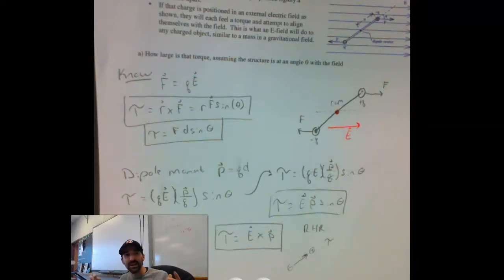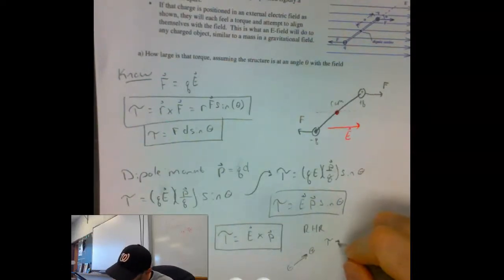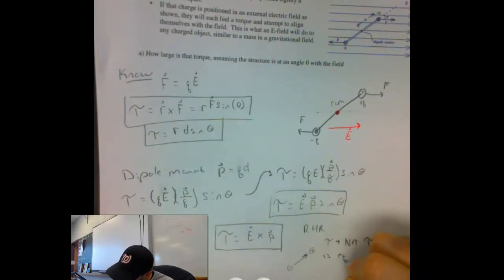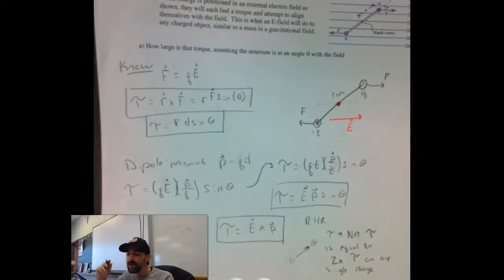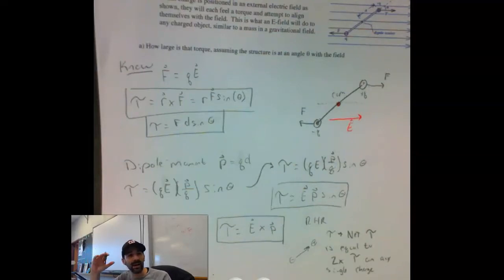And it's going to be in the same direction for both charges. In other words, it's going to cause it to turn in that same direction. So the net torque should be equal to twice the torque on any single object, right? So essentially, due to symmetry, I'm going to say my net torque is equal to two times the torque on any single charge.